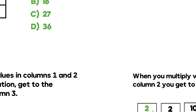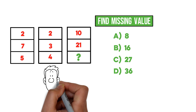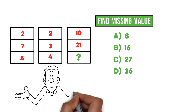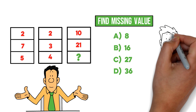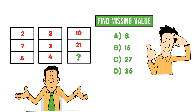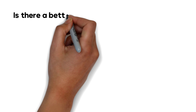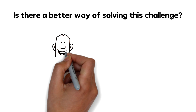One common mistake people make is looking at only one column at a time, but there is no pattern within a single column alone. You have to look across all columns — taking a global view across multiple columns — to get to the correct solution. If you have a better approach, please share your thought process in the comments.